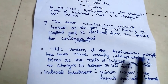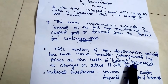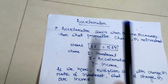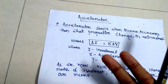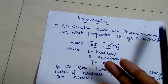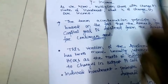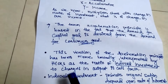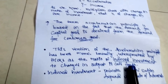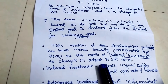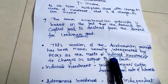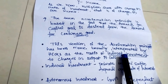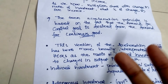This acceleration principle has been given by two economists: one is Hicks and another is Samuelson. Hicks interpreted the acceleration principle more broadly as the ratio of induced investment to change in output. When there is a change in induced investment, there is a change in output. To understand induced investment, we need to know two concepts: induced investment and autonomous investment.